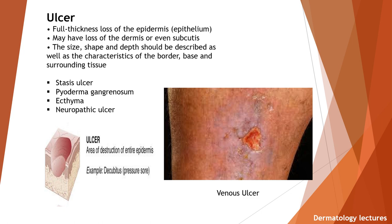What is an ulcer? It is a full thickness loss of epidermis; may have loss of dermis or even subcutis. The size, shape, and depth should be described, as well as the characteristics of the border, base, and surrounding tissue. Examples are stasis ulcer, pyoderma gangrenosum, ecthyma, and neuropathic ulcers. Here you can see the example of a venous ulcer.